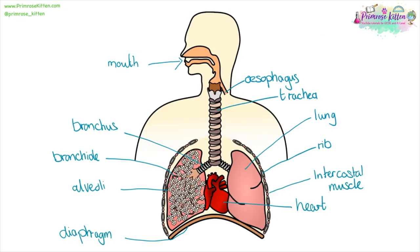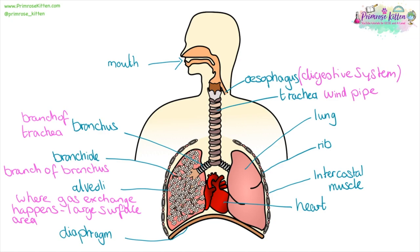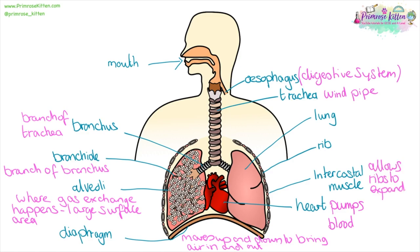Here we have our respiratory system. It goes in through the mouth or the nose, down into the trachea, which is also known as the windpipe, then into the bronchus, which is a branch of the trachea, into the bronchioli, which is a branch of the bronchus, and into the little grape or cauliflower-shaped alveoli — this is where gas exchange happens and they have an incredibly large surface area. Your diaphragm moves up and down to bring air in and out. The heart pumps blood around the body. The intercostal muscles allow the ribcage to expand, and the ribs protect the lungs.